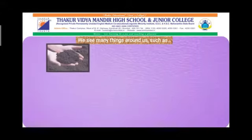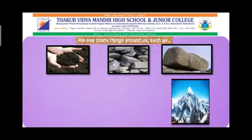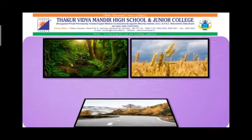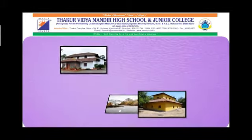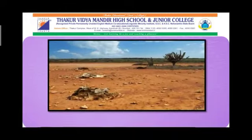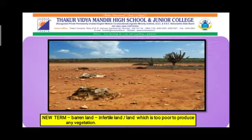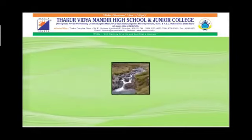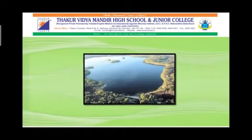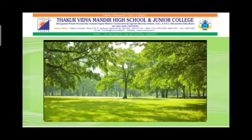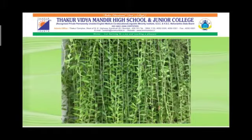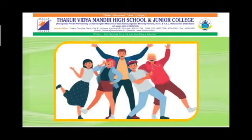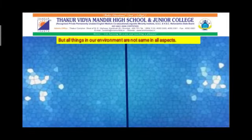Children, we see many things in our environment such as soil, stones, rocks, mountains, hills, jungles, fields, roads, and houses. At many places we see barren lands. A barren land means infertile land, or a land which is too poor to produce any vegetation. At many places we see rivers, streams, and lakes. We see many kinds of animals, trees, bushes and climbers. All these things make our environment very very beautiful. We human beings too are one of the important parts of the environment.